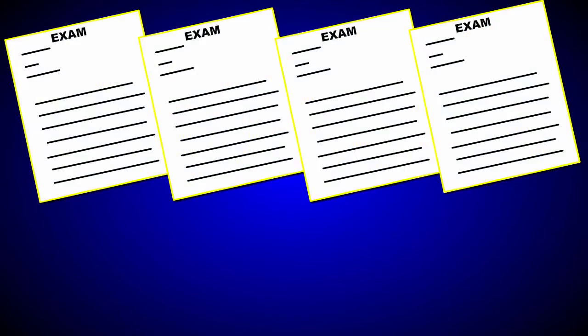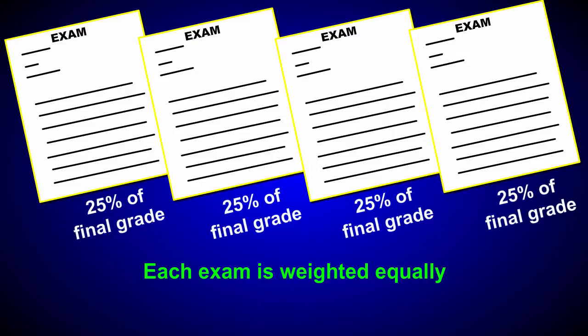Let's say your grade for your psychology course is based upon four exams. Each exam is worth 100 points. Since the exams for this course are weighted equally, each exam is worth 25% of your final course grade.